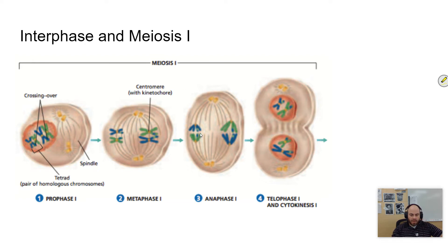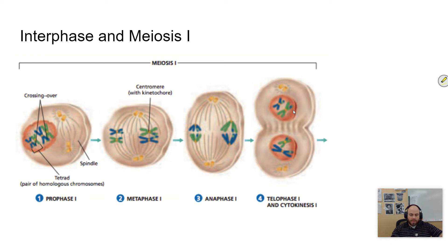Anaphase I is important: in anaphase I, what happens is those homologous pairs — the one you got from mom and the one you got from dad — are going to separate. So anaphase I is where homologous pairs separate. Each resulting cell is going to get one of each of those pairs, and the chromosomes still represent their duplicated state.